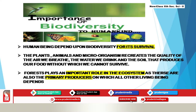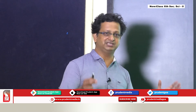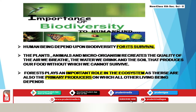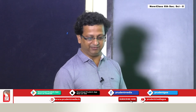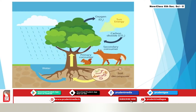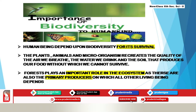Forests play an important role in the ecosystem. As we have studied, in an ecosystem living and non-living things are interdependent on each other. Forests play a very important role because they are the primary producers on which all other living beings depend. They are useful to us in various ways.